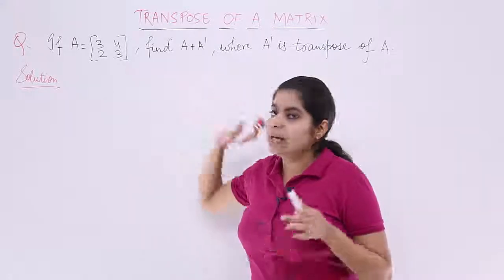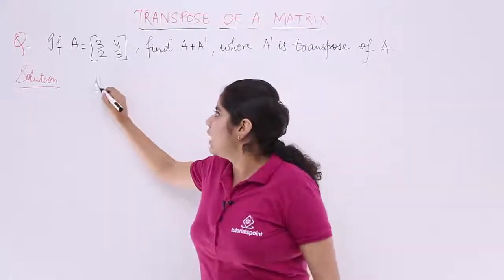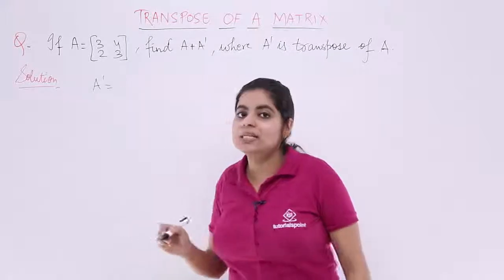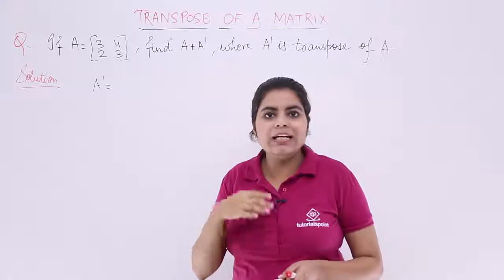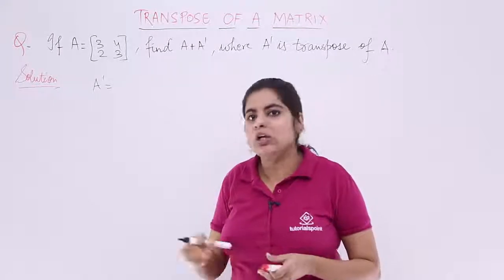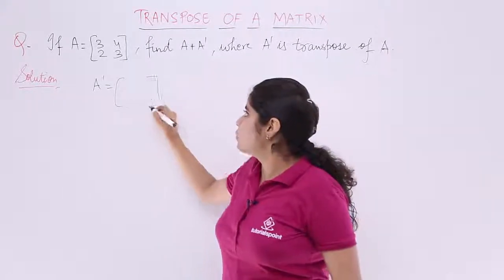We already know that A is given to us. Let's find out A'. A' basically means that you have to find the transpose, and transpose means interchange the rows with the columns and columns with the rows. So let's do it quickly.